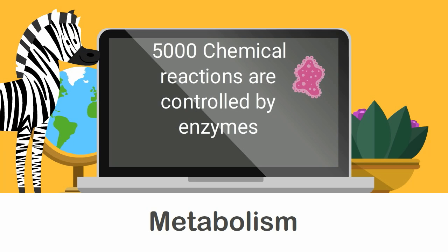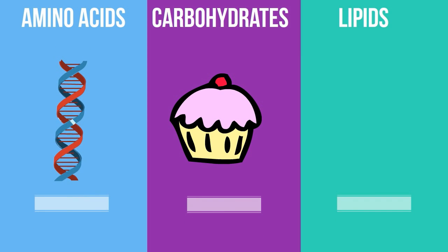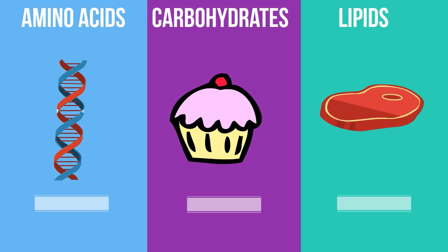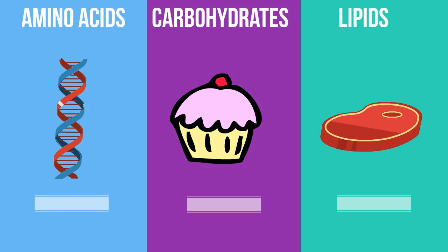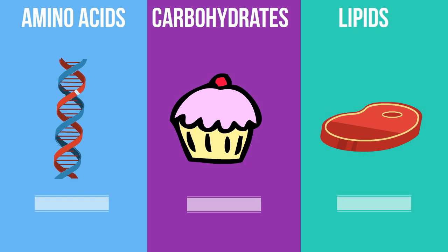Most of the structures that make up animals, plants, and microbes are made from three basic classes of molecules: amino acids, carbohydrates, and lipids. Many chemical reactions focus on making these molecules during the construction of cells and tissues, or by breaking them down and using them as a source of energy during digestion and cellular respiration.